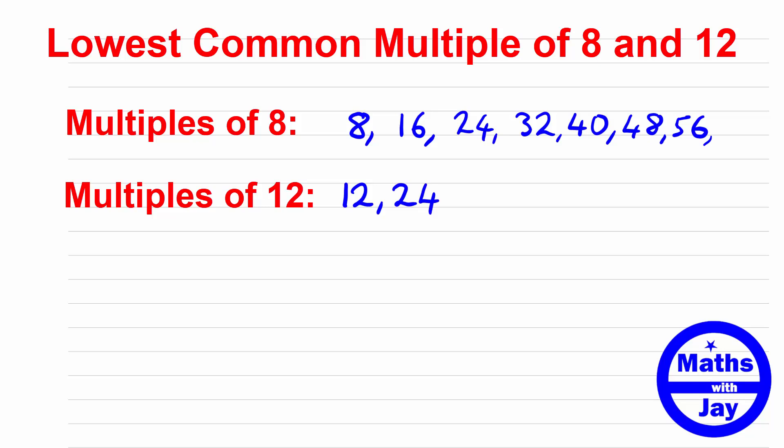We found our answer because we want to know the lowest common multiple. So we found that 24 is in common, it's in both of our lists so it's the lowest one as well. We haven't got another one that's the same in both lists have we? We could go on, write down more multiples of 12 and we would see that the next common multiple is 48 but that's not really of any interest to us.